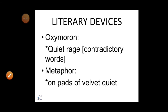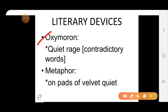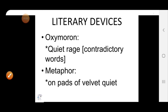The next device used is oxymoron. It is used in 'quiet rage.' Whenever two words that are contradictory in meaning appear together — like quiet and rage — quiet means silence and rage means anger — both are contradictory, so that is oxymoron. Metaphor is also used in 'on the pads of velvet quiet,' where the animal's claws are compared to a velvet. So this concludes the poem 'A Tiger in the Zoo.' I hope everything is clear to you. Thank you.